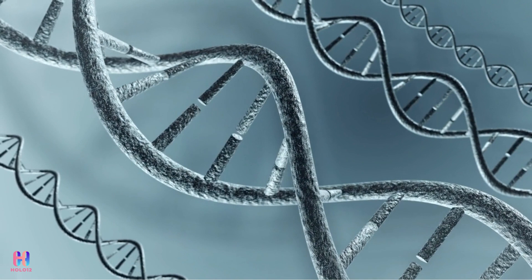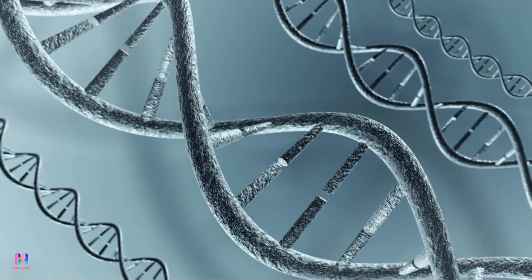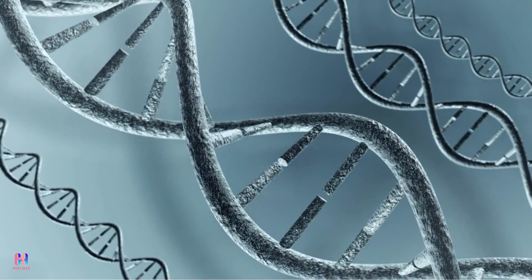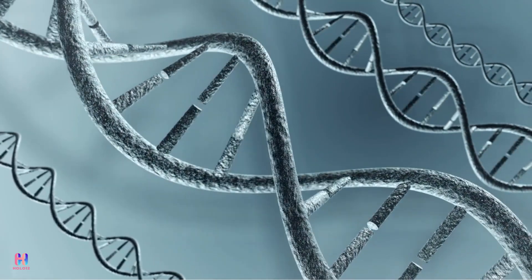It is present in a twisted form, so its structure is known as a double helical structure. This structure of DNA was explained by James Watson and Francis Crick in the year 1953.